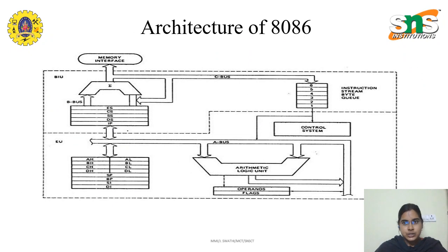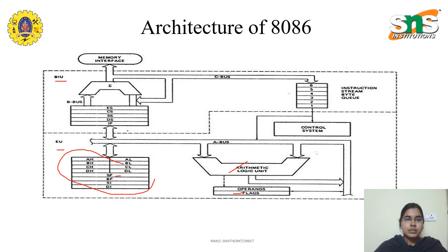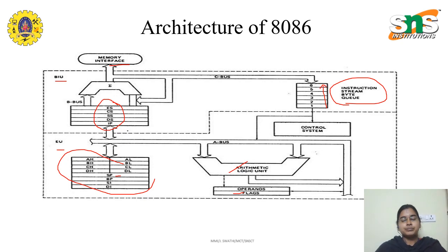This completes the architecture of 8086. As discussed, it has two main parts: the Execution Unit and the Bus Interface Unit. The Execution Unit contains general purpose registers, the stack pointer, the ALU, and the flags. These are connected to the Bus Interface Unit, which contains the segment registers (ES, CS, DS, SS), supports memory interfacing, and holds the instruction queue capable of storing up to six bytes of instructions. In the next lecture, we will discuss the pin configuration of the 8086.